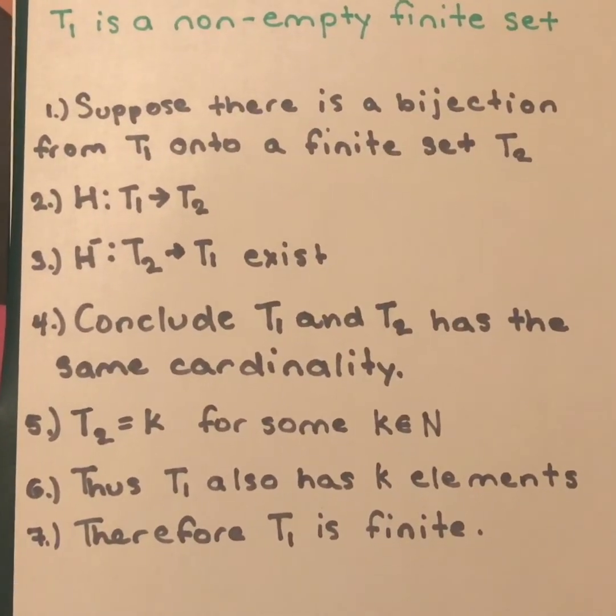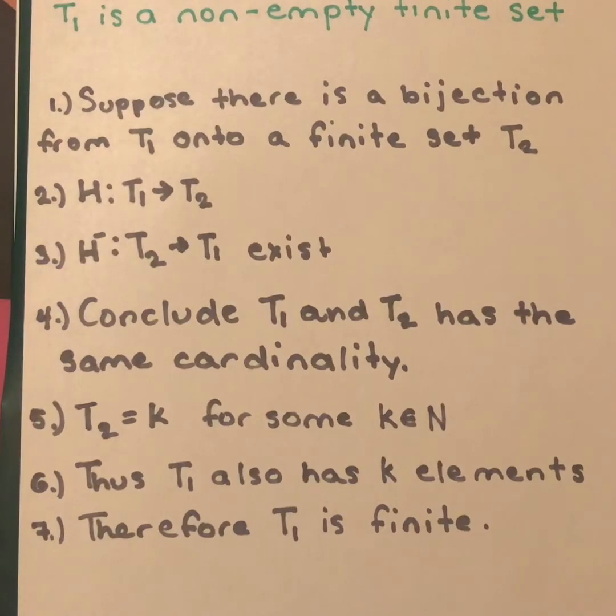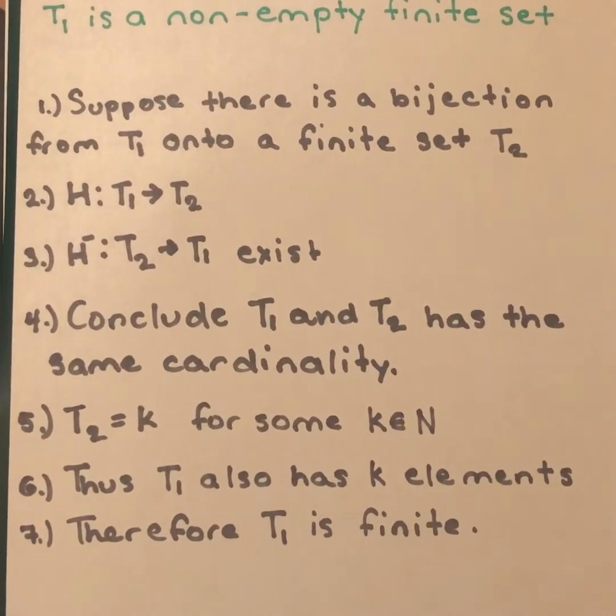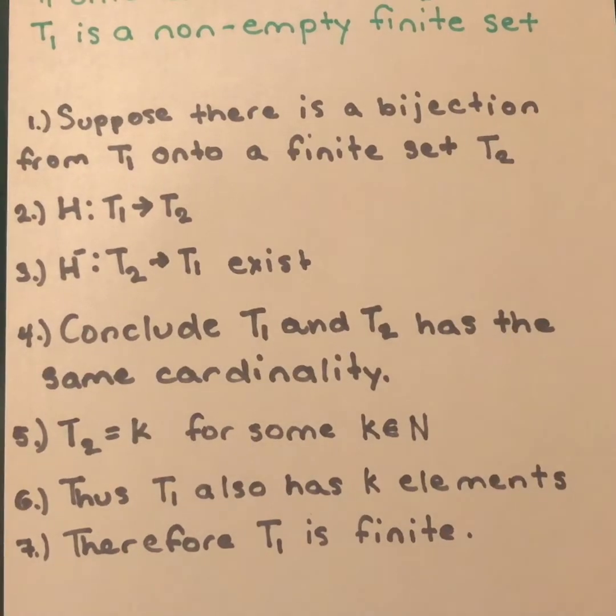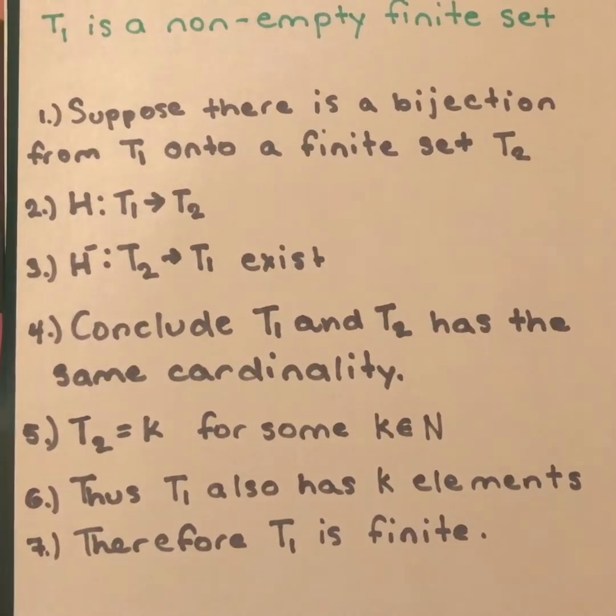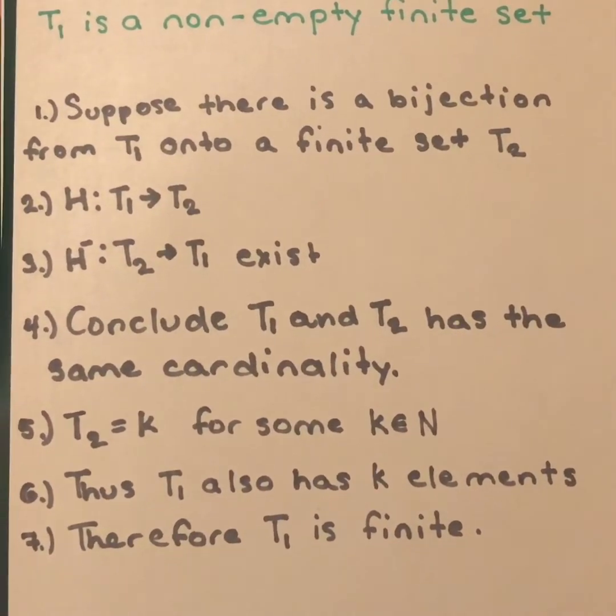Thus, T1 and T2 must have the same cardinality. And cardinality just means the amount of elements that are in the set. That is, T1 and T2 have the same amount of elements in them.